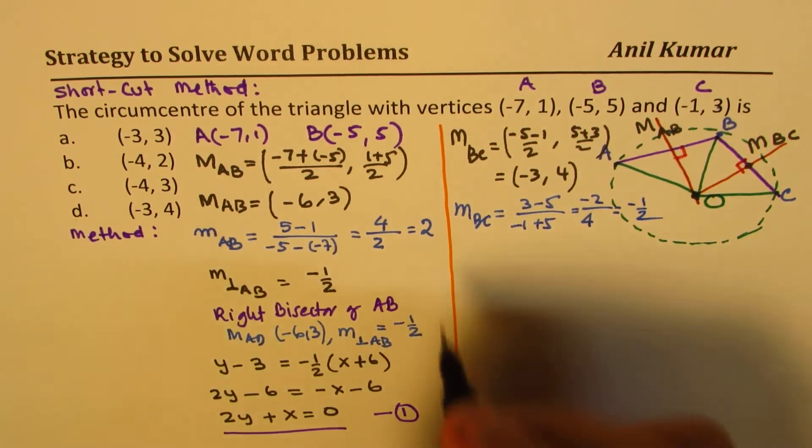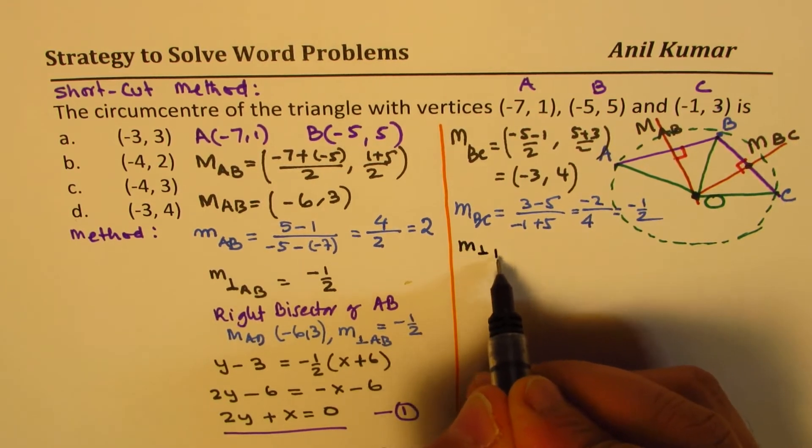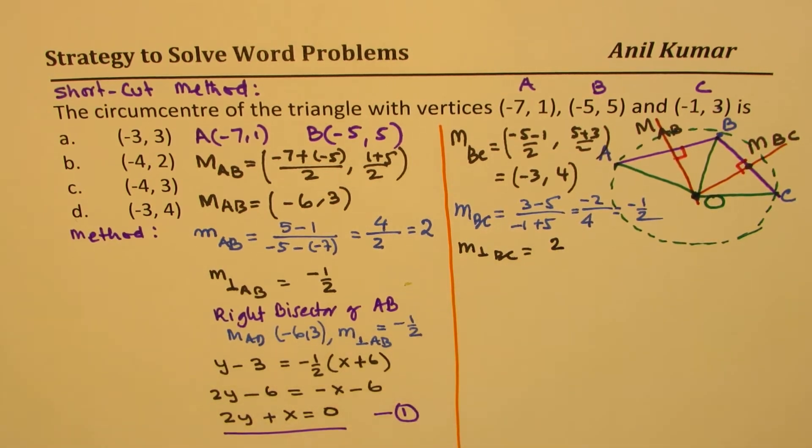So that means that the perpendicular is what? So perpendicular to BC is basically 2. So we get 2.